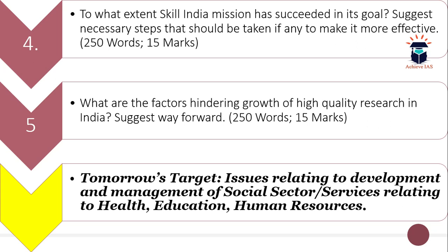Your fourth question is: 'To what extent has the Skill India Mission succeeded in its goal? Suggest necessary steps that should be taken, if any.' Your fifth question is: 'What are the factors hindering growth of high-quality research in India?' — along with the way forward.